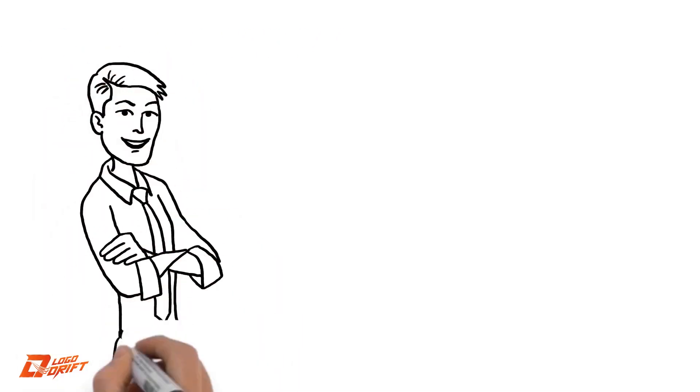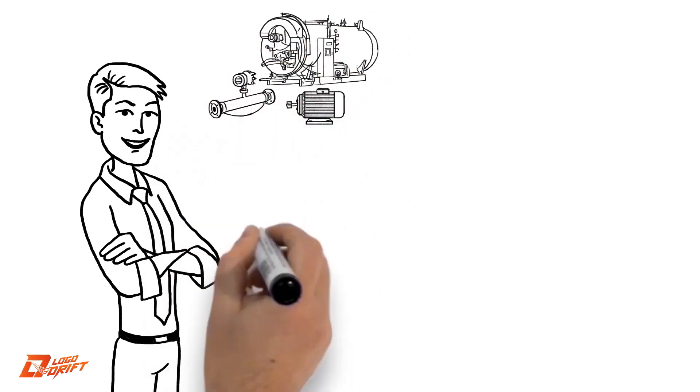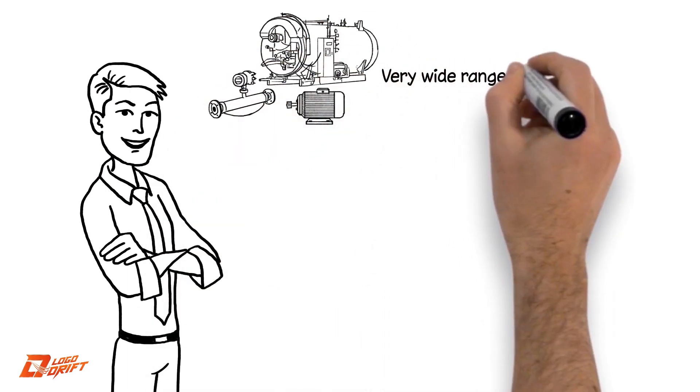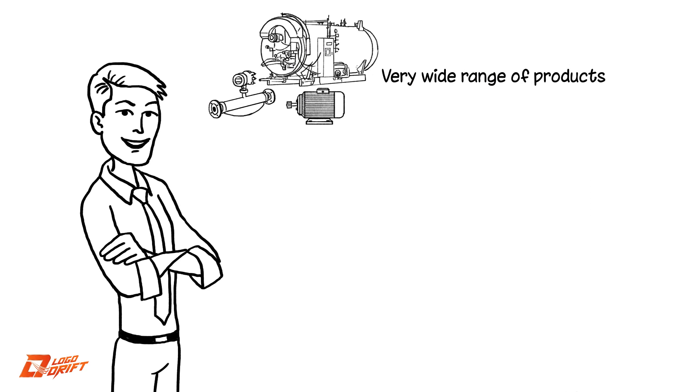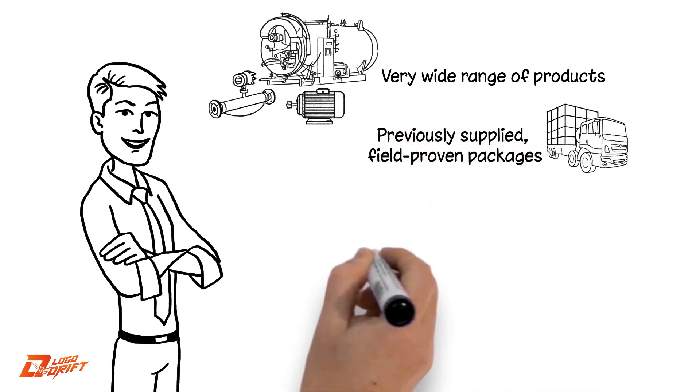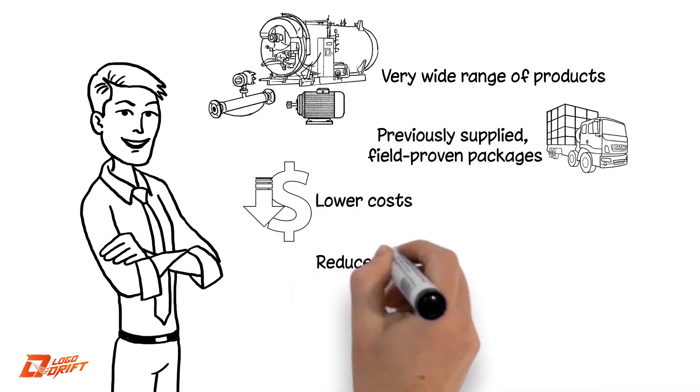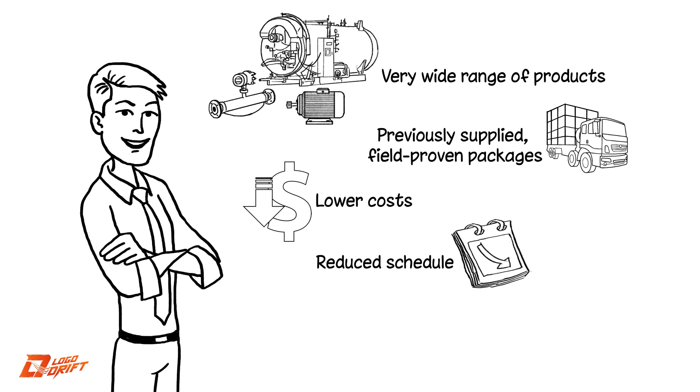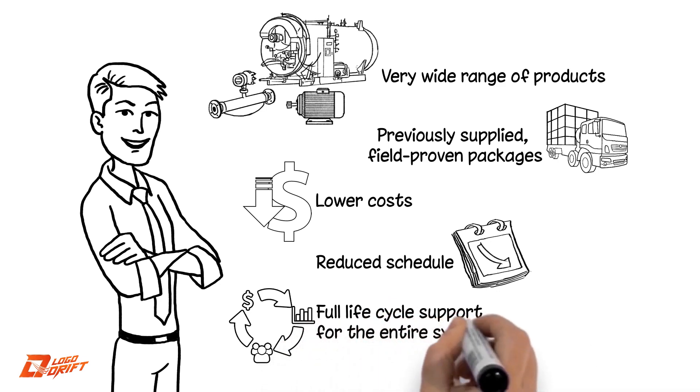What Bob gets? True product expertise across a very wide range of products and due to Tundra's ability to draw upon previously supplied packages, lower costs, a reduced schedule and improved package quality. And best of all, full lifecycle support for the entire system.